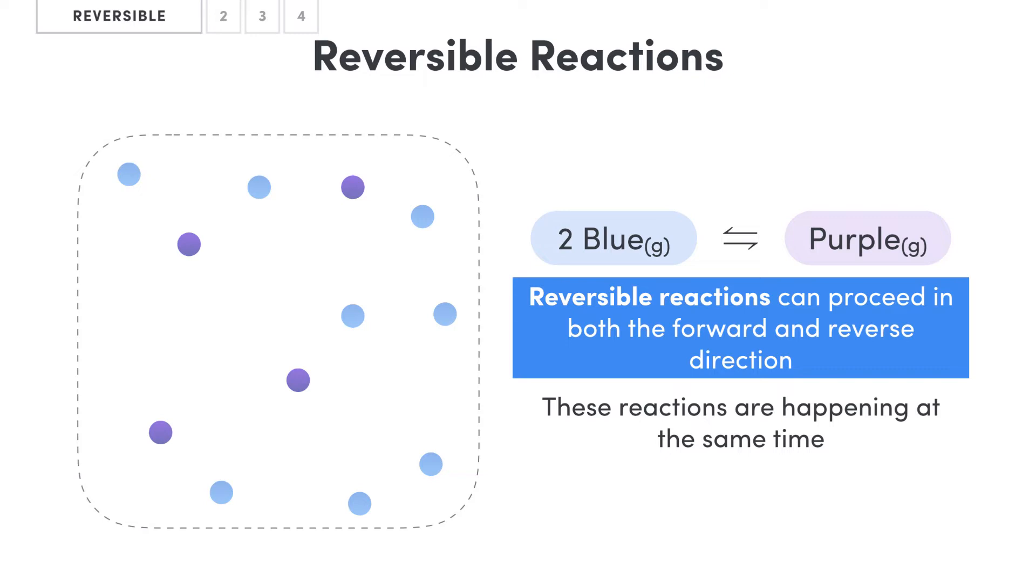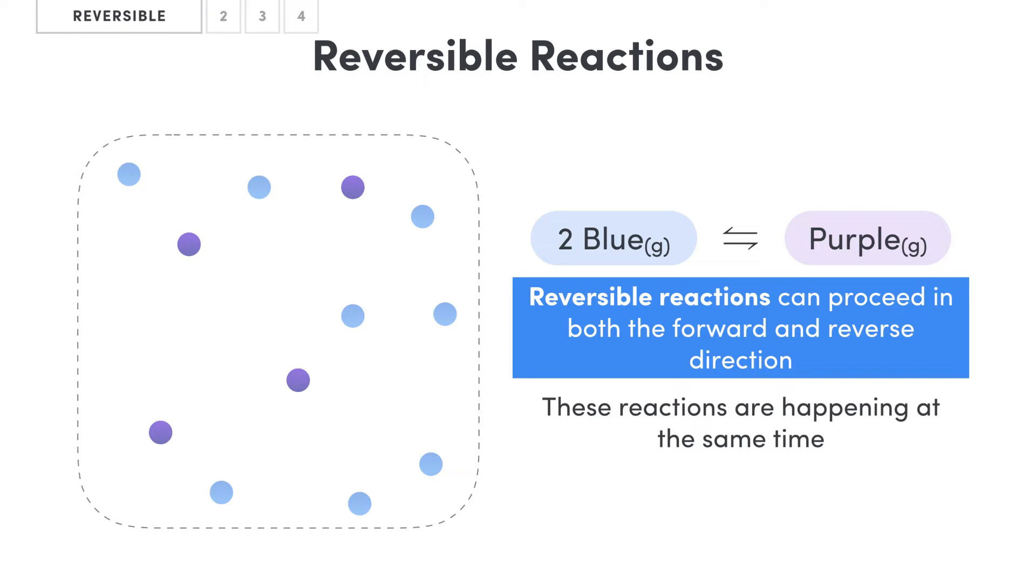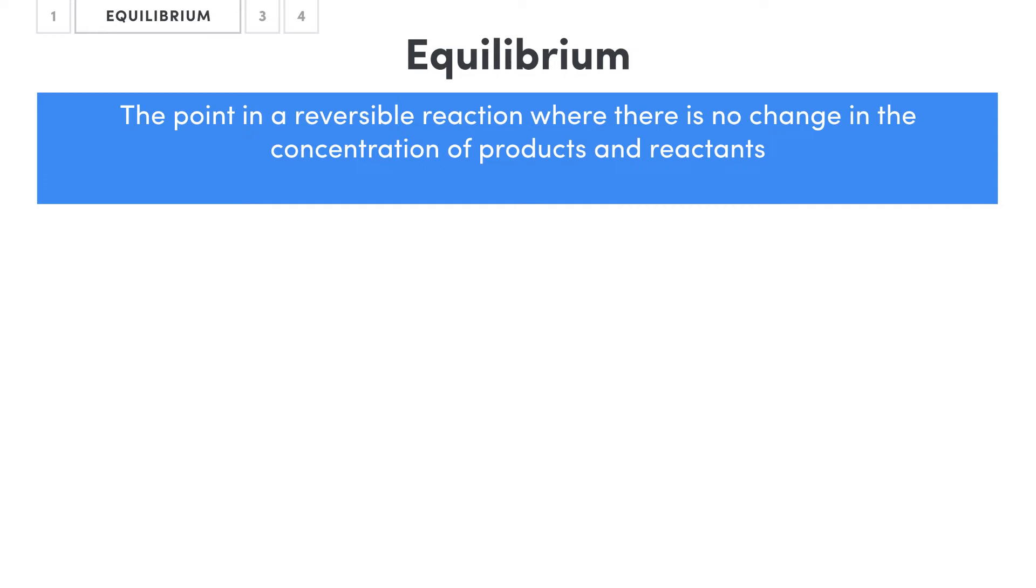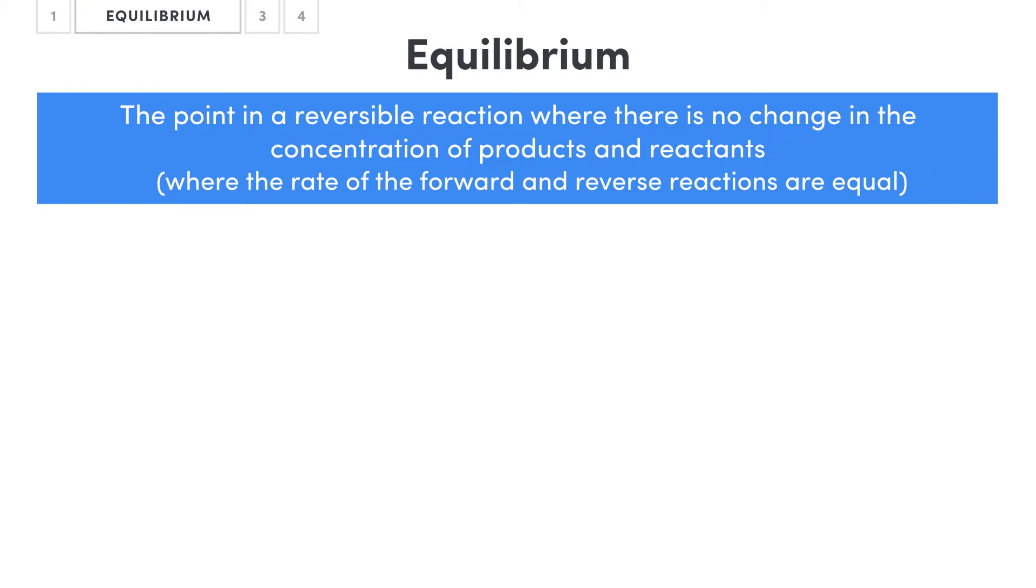So that's cool, we now understand that some reactions are in fact reversible and this has some important implications for us in relation to equilibriums. The first and most important is that these reversible reactions are capable of reaching what we refer to as an equilibrium. An equilibrium is the point in a reversible reaction where the concentration of reactants and products is no longer changing, where the rate of the forward reaction equals the rate of the reverse reaction.